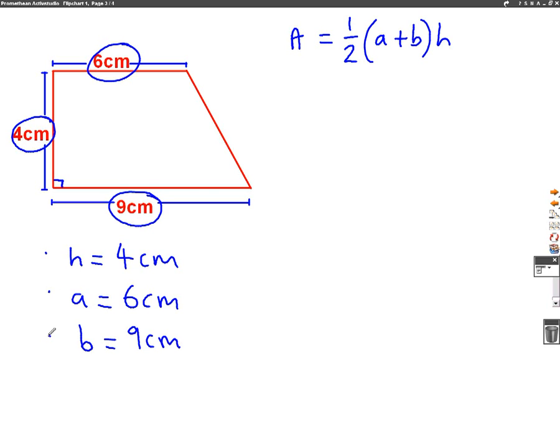So this will be half, A, which is in this case 6, plus B, which is 9, times H, which is 4. So I've put the numbers into my formula. And remember, I'll work out the brackets first.